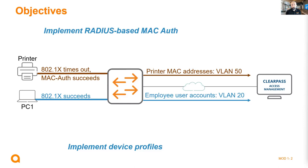If you have two methods on one port - dot1x and MAC authentication - and a printer connects, dot1x will fail because the printer has no supplicant. The switch will then time out and wait a certain period before trying the second method, MAC authentication. By default that timeout is 60 seconds, and it is configurable.